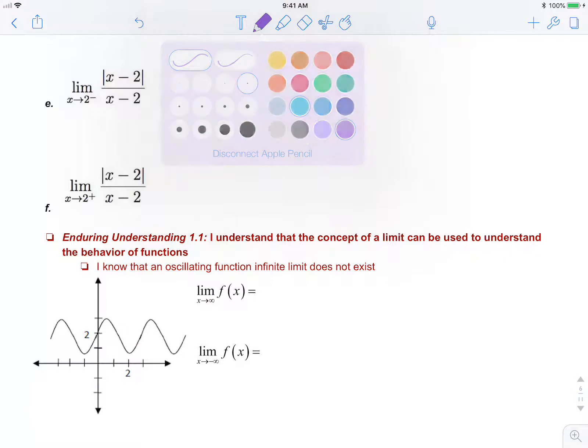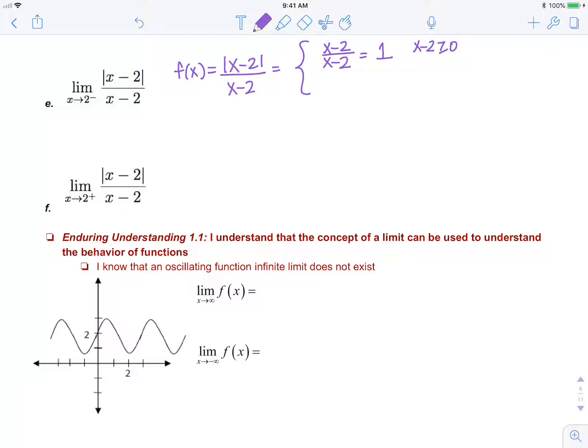So let's say f of x equals absolute value of x minus 2 over x minus 2, and that is x minus 2 over x minus 2, which is 1. And that's when x minus 2 is greater than or equal to 0, or when x is greater than or equal to 2.